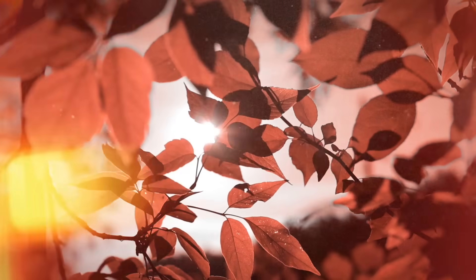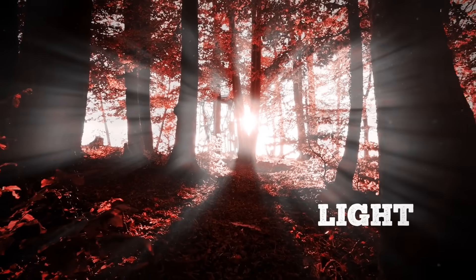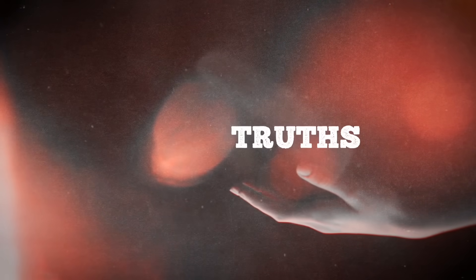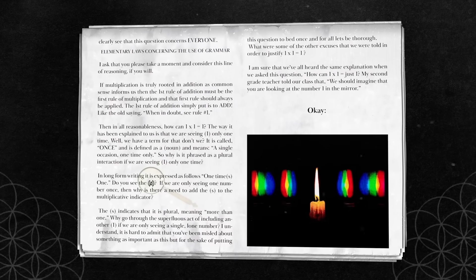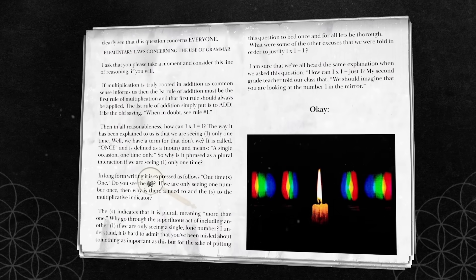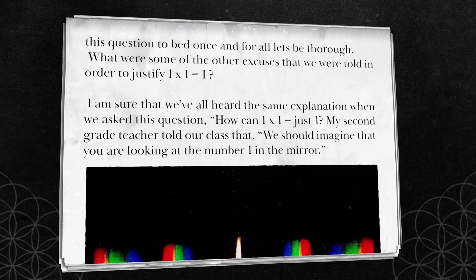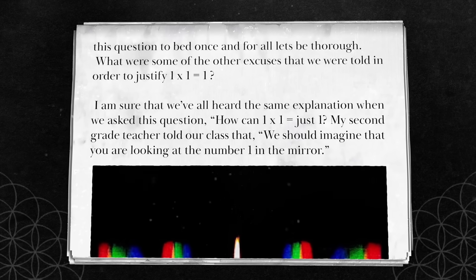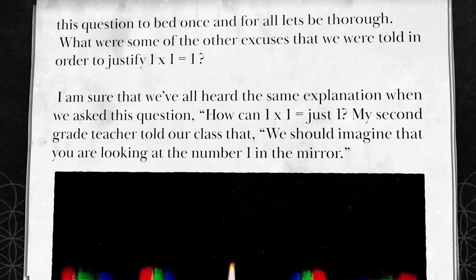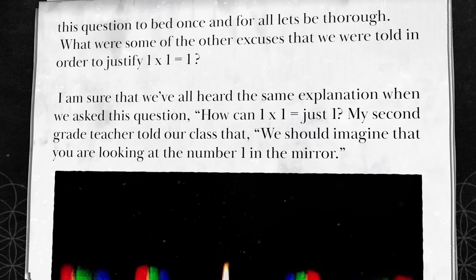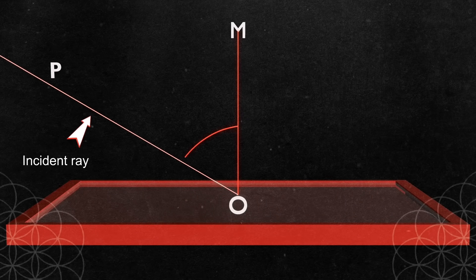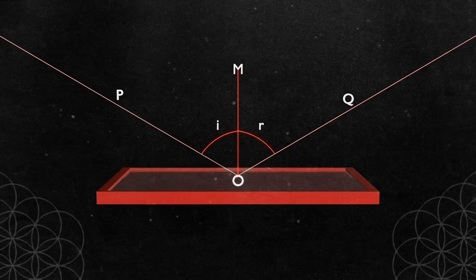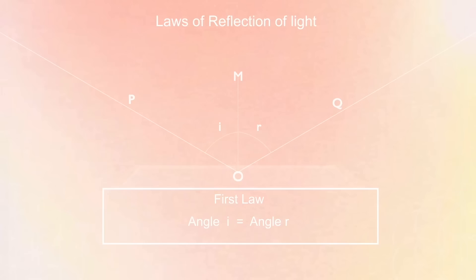In this intriguing exploration, Terrence delves into the fascinating realm of light and perception, challenging our understanding of the universe and the mathematical principles we hold as truths. Terrence starts with a simple question posed about the equation one times one equals one, drawing an analogy with a mirror. My second grade teacher told our class that, we should imagine that you're looking at the number one in the mirror.